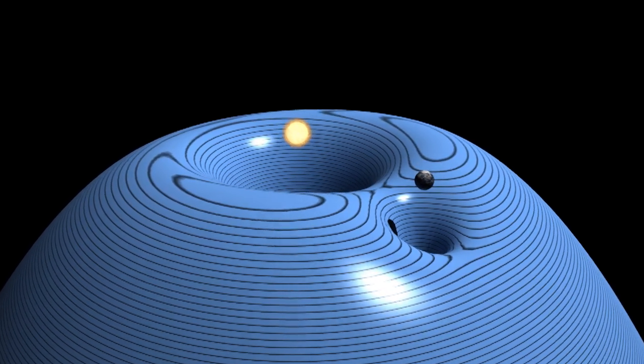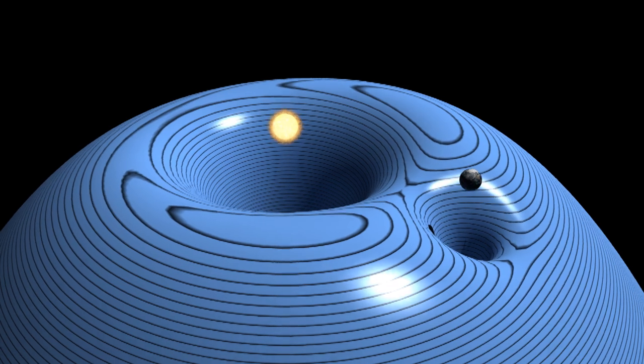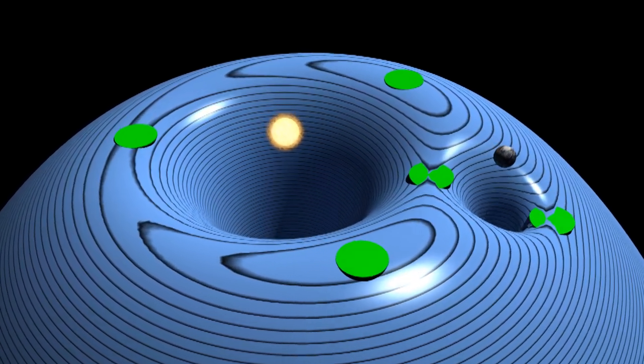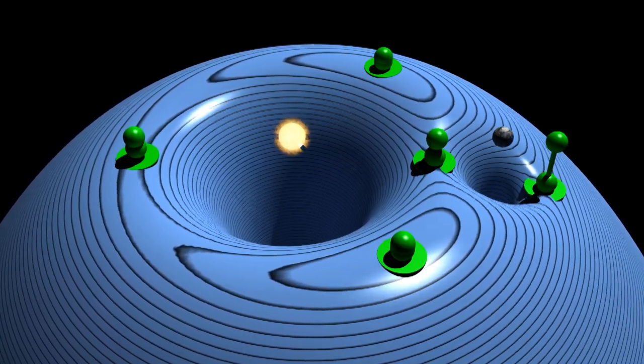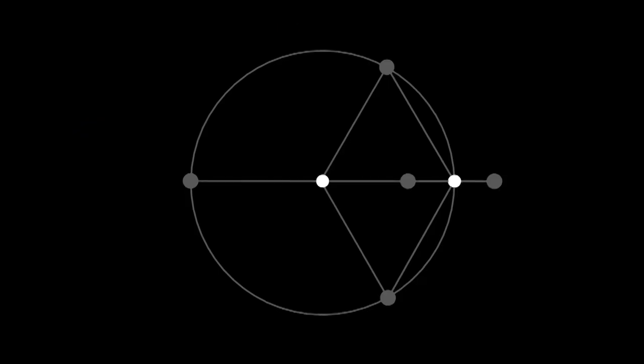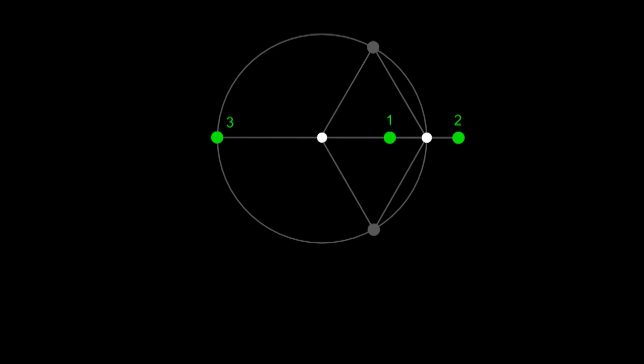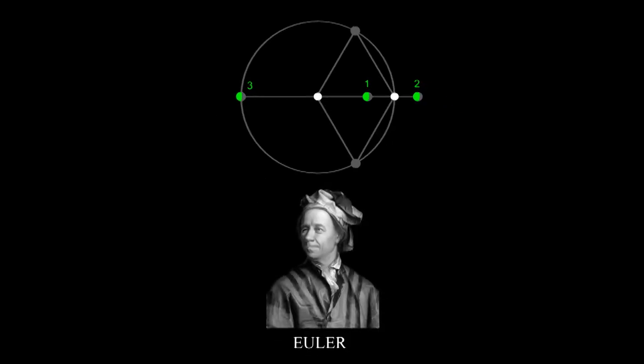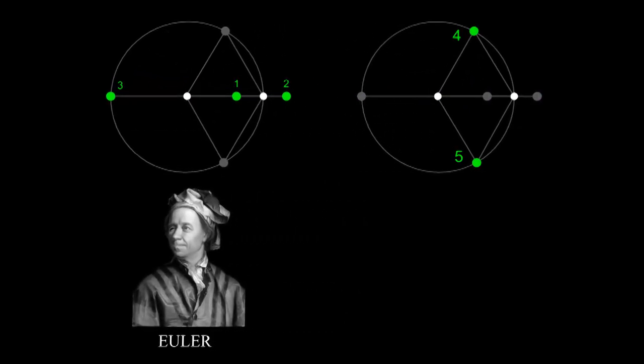But an object won't move if the surface is flat. The surface is flat at five points called the Lagrange points. The first three points were discovered by Euler. The remaining two were discovered by Lagrange.